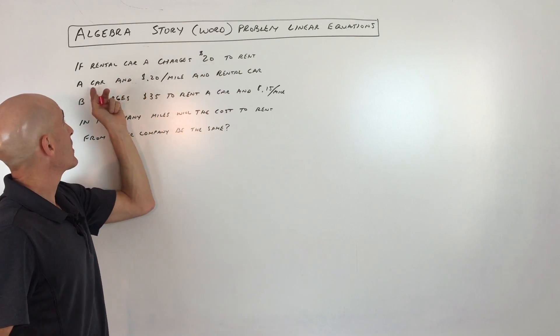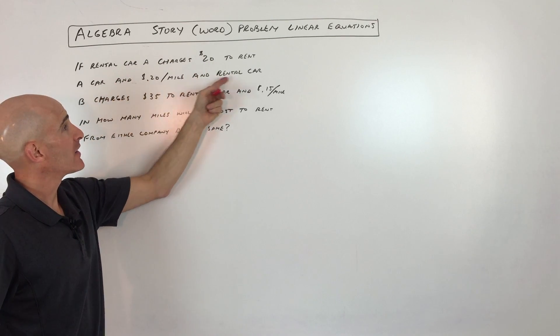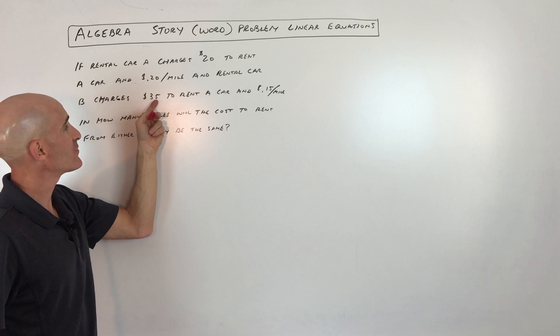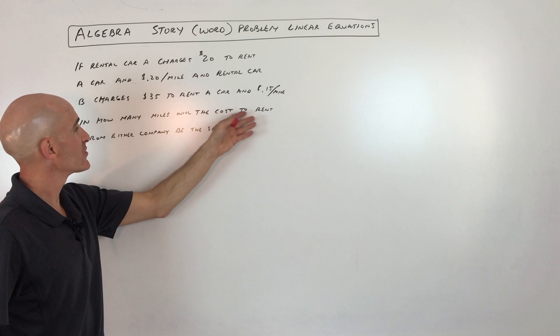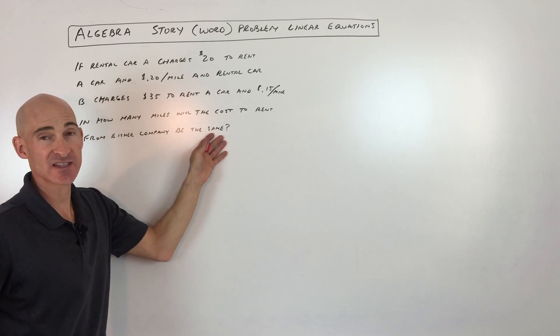Rental car A charges $20 to rent a car and $0.20 per mile, and rental car company B charges $35 to rent a car and $0.15 per mile. How many miles will the cost to rent from either company be the same?